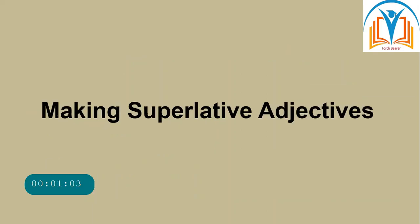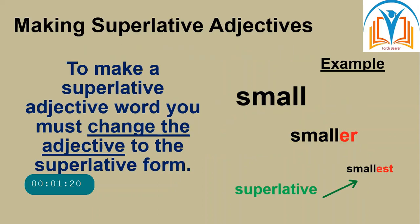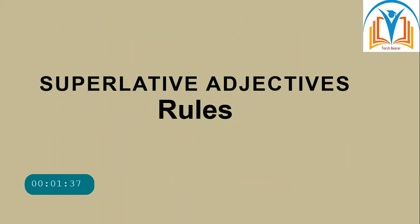Making superlative adjectives: to make a superlative adjective, you must change the adjective to the superlative form. Look at the example: small, smaller, and smallest. Smallest is the superlative form. Now let's look at the rules for how we make superlative adjectives.